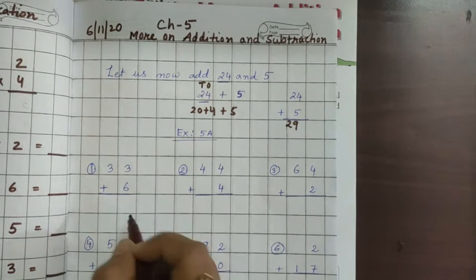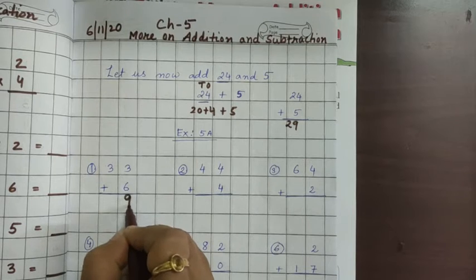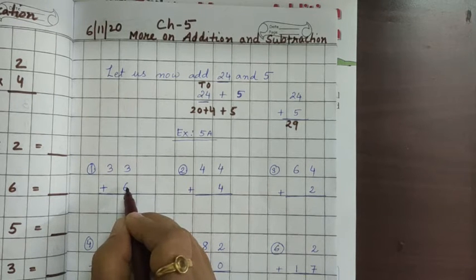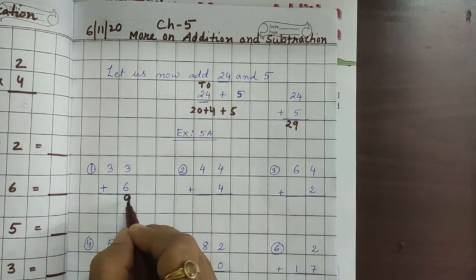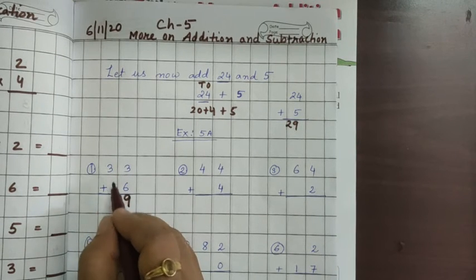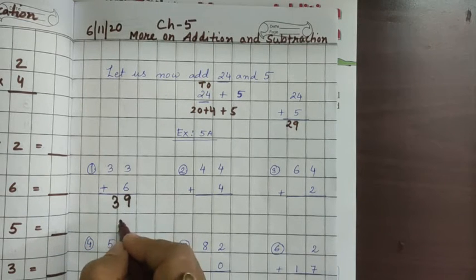So 6 plus 3, how much? You can keep the bigger number in your mind. Think that 6 is in your mind and you have to count forward another 3. So you will get 9, and 3 down nothing is there. Directly 3 will come. So it is 39.